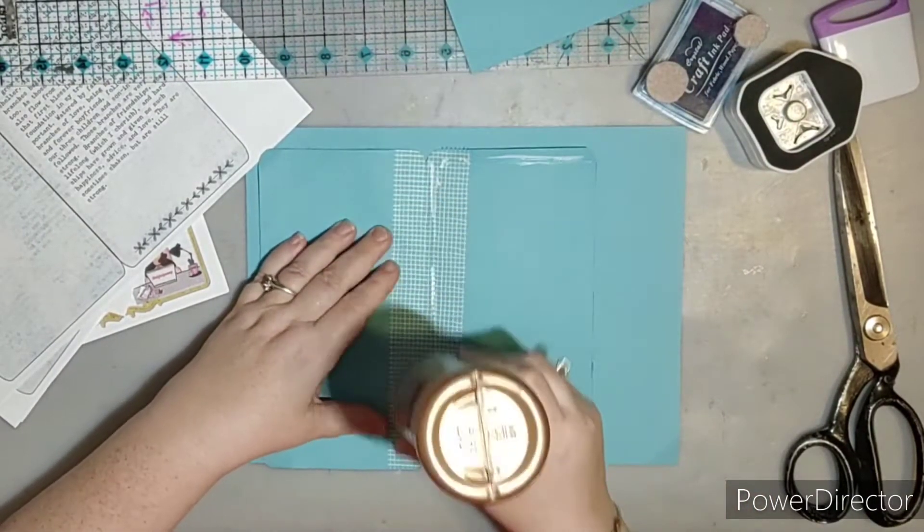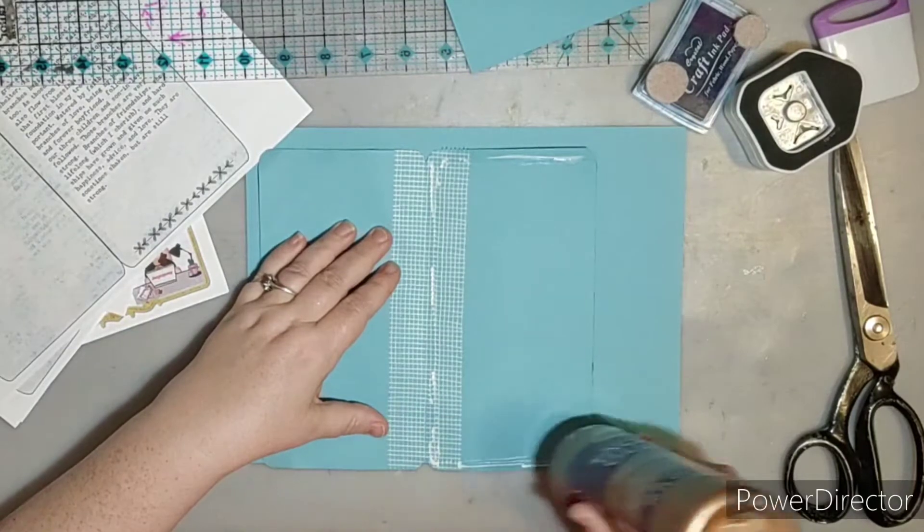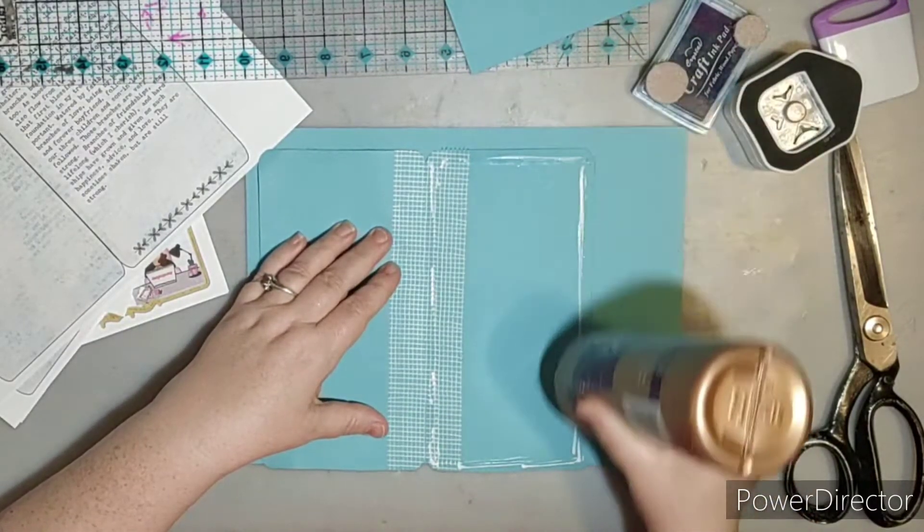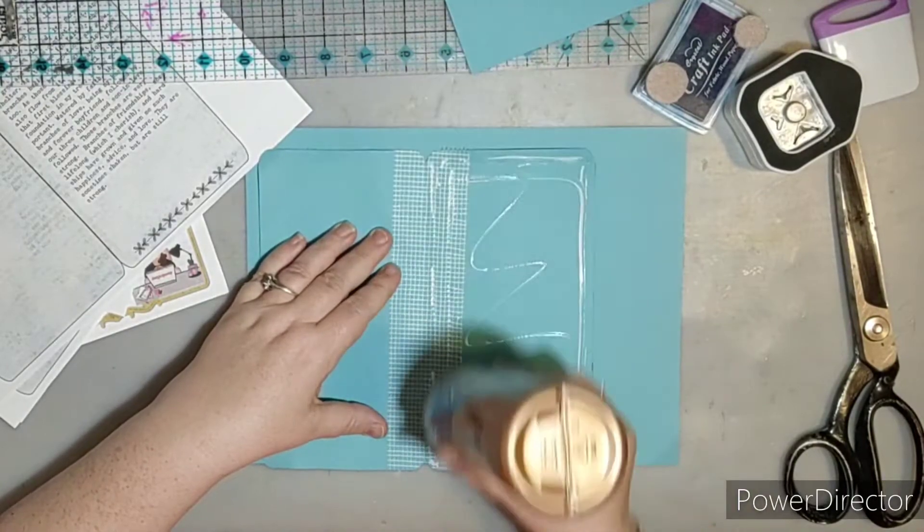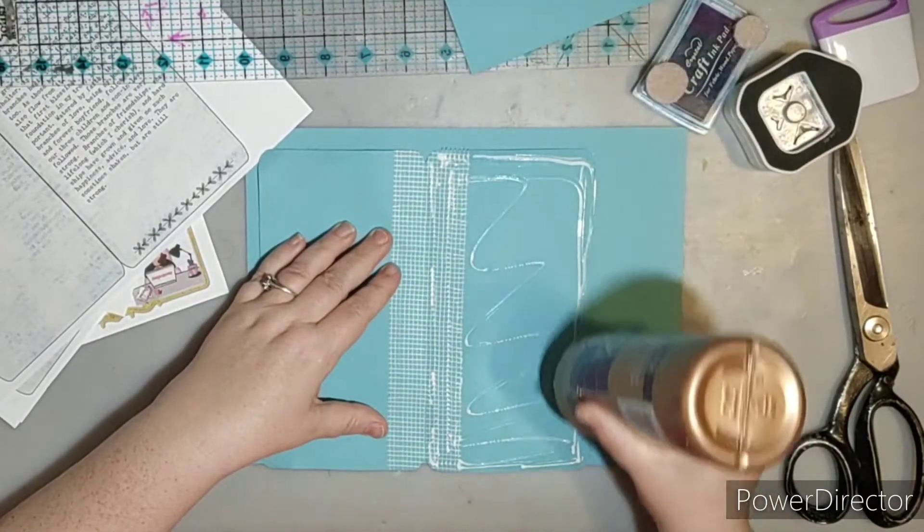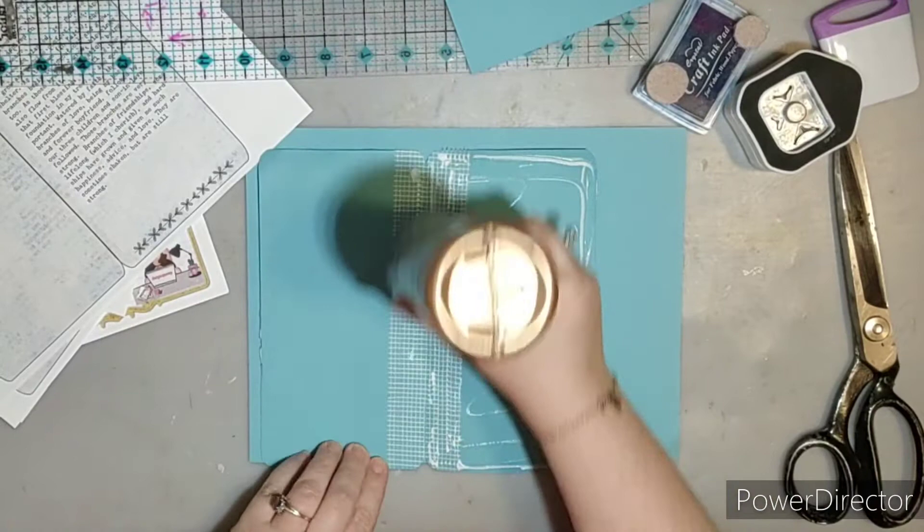Now, if you don't have cardstock, you can use junk mail papers, you can use newspapers, you can use cereal boxes, any kind of cardboard or thick papers. You can even layer up old book text to make your cover sturdier.